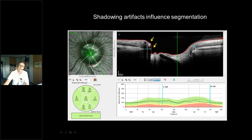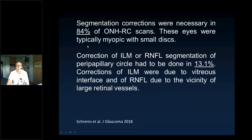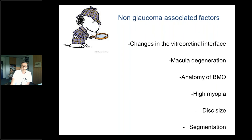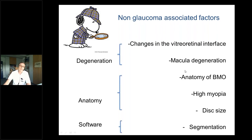You can also see a very impressive shadowing effect by retinal vessels. In a 2018 paper we found that re-correction of scans at the optic nerve head was needed in 84% of cases, while re-segmentation of the nerve fiber layer was only needed in 13% — so always look at your B-scans before trusting the measurement. Non-glaucoma associated factors include: changes in the retinal interface, macular degeneration, anatomy of Bruch's membrane opening, high myopes, disc size, and segmentation issues — all leading to generation changes, anatomical differences, and software issues.